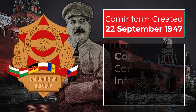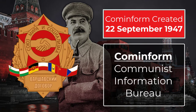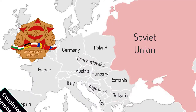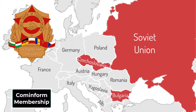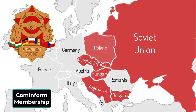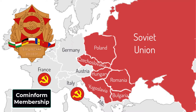Cominform stands for the Communist Information Bureau. It was Stalin's new political organization, which included the Soviet Union Communist Party and the communist parties of the satellite states of Bulgaria, Czechoslovakia, Yugoslavia, Hungary, Poland, Romania, and the communist parties of France and Italy.